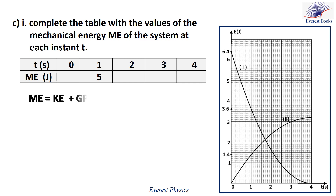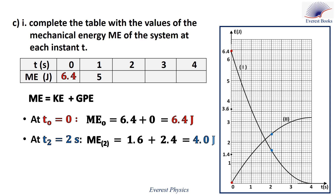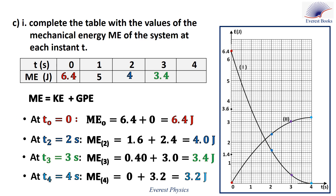Part B2c: complete the table with mechanical energy values at each instant. ME equals KE plus GPE. At t equals 0: KE equals 6.4 J, GPE equals 0 J, so ME equals 6.4 J. At t equals 2 s: KE equals 1.6 J, GPE equals 2.4 J, so ME equals 4.0 J. At t equals 3 s: KE equals 0.4 J, GPE equals 3.0 J, so ME equals 3.4 J. At t equals 4 s: KE equals 0 J, GPE equals 3.2 J, so ME equals 3.2 J.